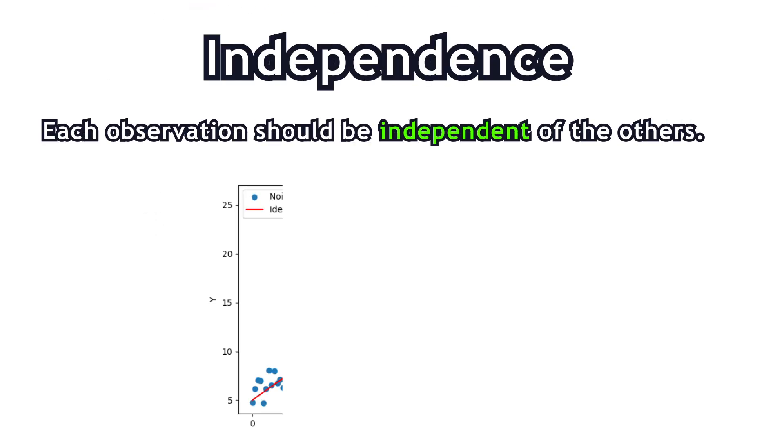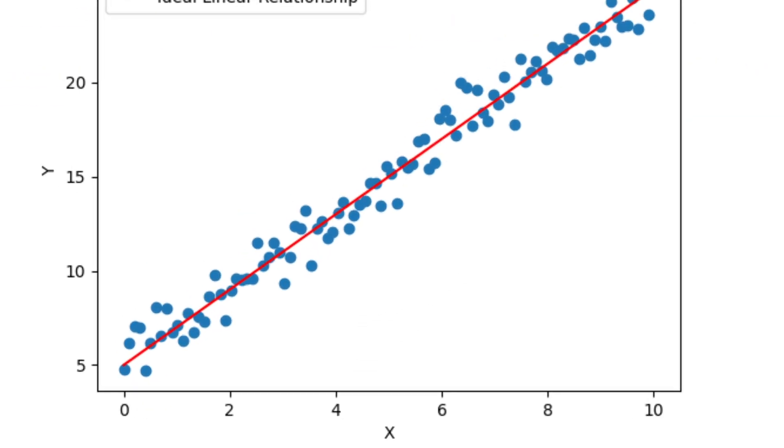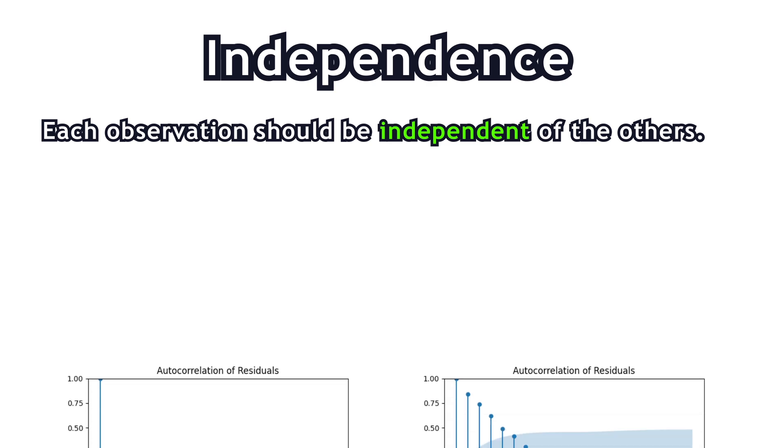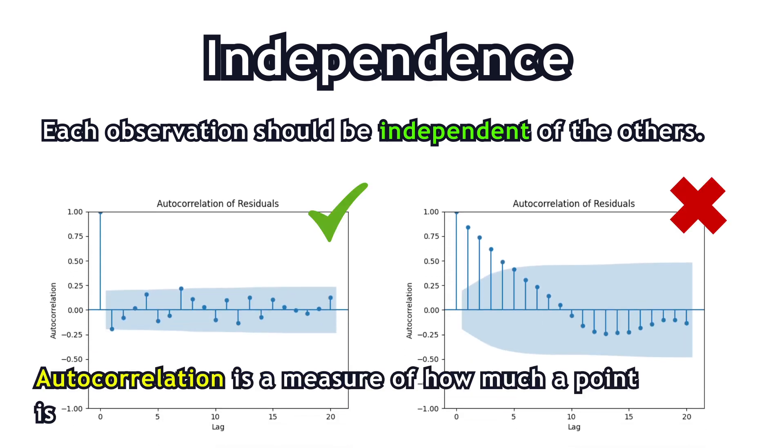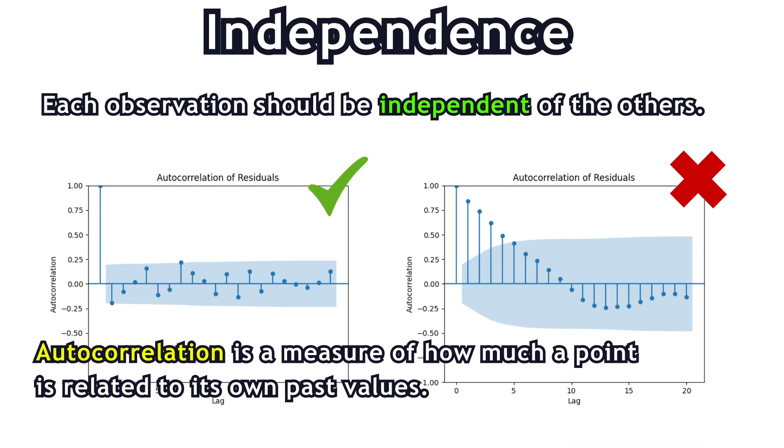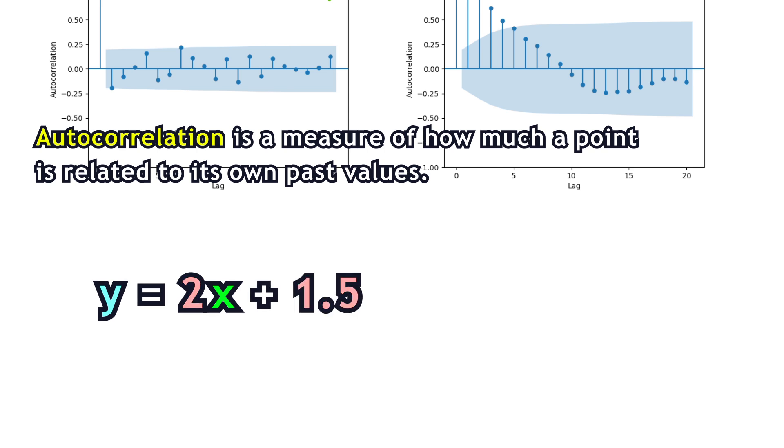Secondly, each observation should be independent of the others. The independence of observations ensures that each data point contributes new and unique information to the estimation of the regression coefficients. The violation would lead to a biased estimate of the coefficients of the model.